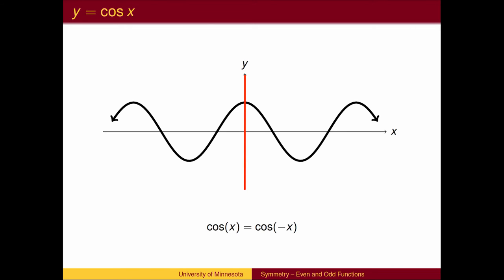For those familiar with trigonometry, the cosine function is another function that is symmetric with respect to the y-axis. The cosine value of an angle to the right of the y-axis is the same as the cosine value of the opposite angle that is left of the y-axis.